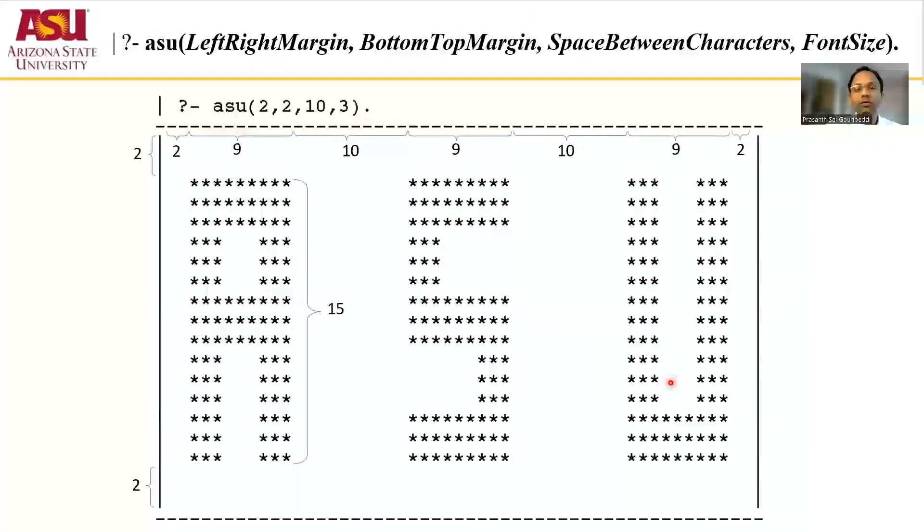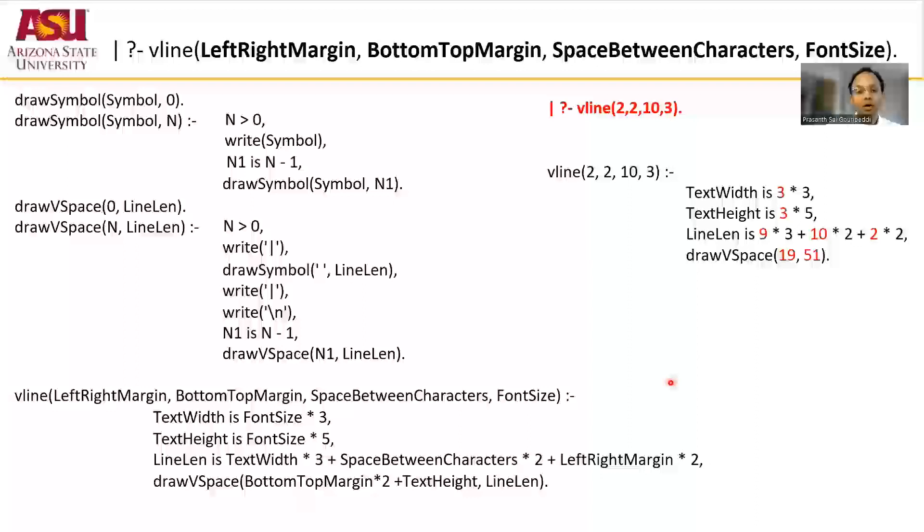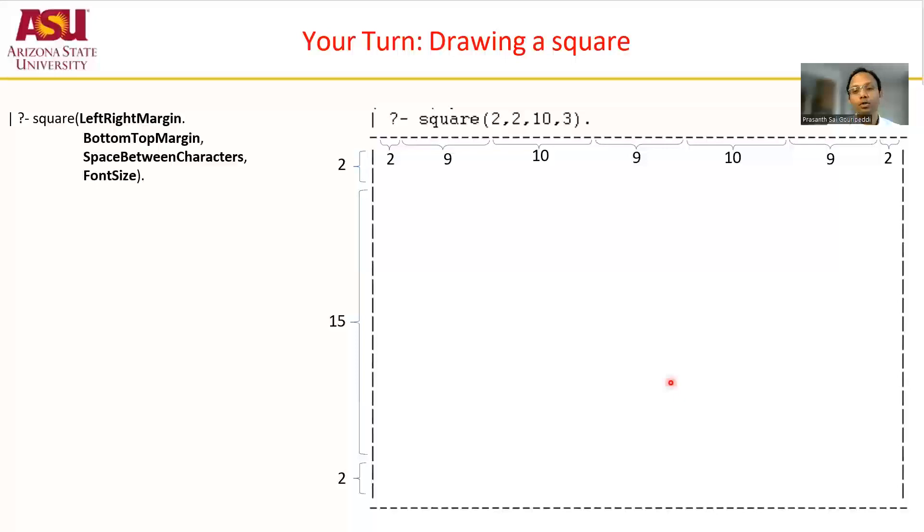In part one we discussed the horizontal and vertical lines, the number of dashes that you need to draw a horizontal and vertical line. So the codes look something like this, and finally we came up with drawing this box. In the case where we draw a square (2, 2, 10, 3), the horizontal line required 53 dashes and there were 19 vertical lines that we had to draw.